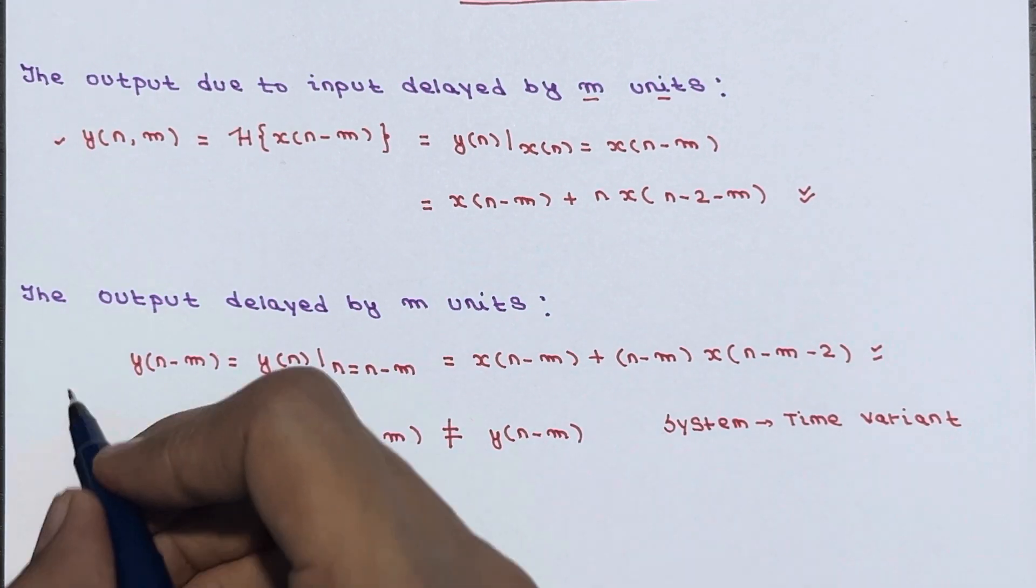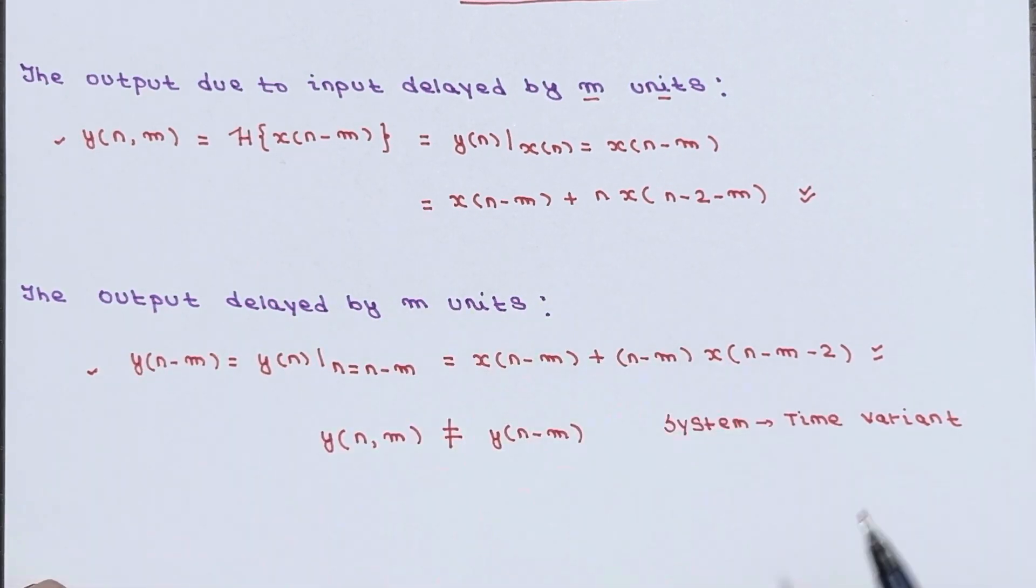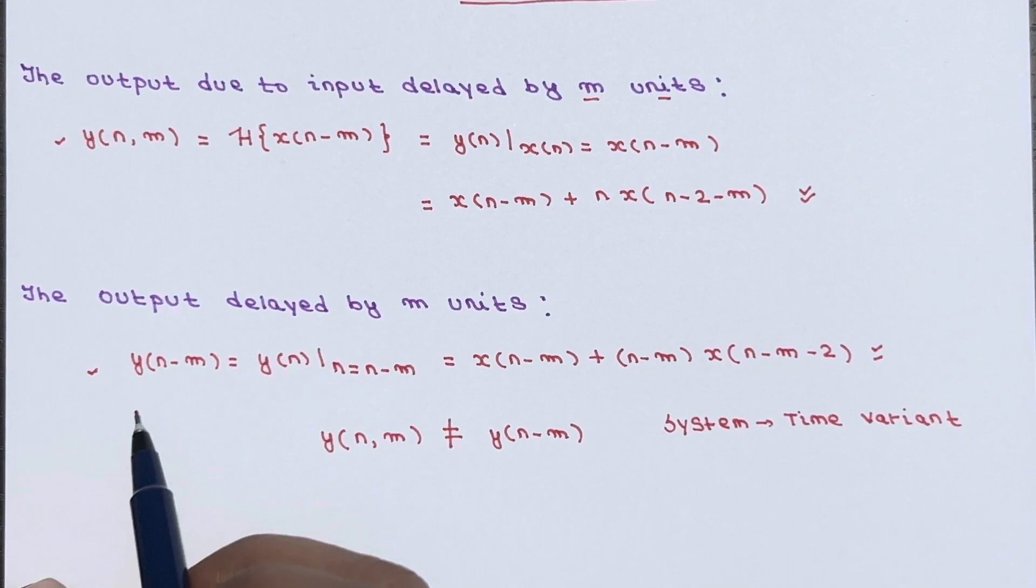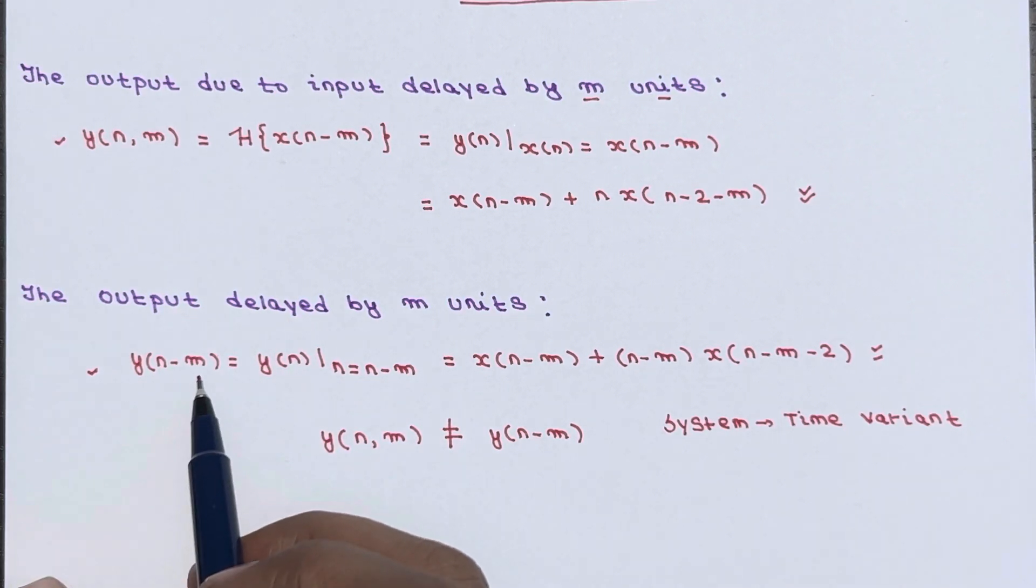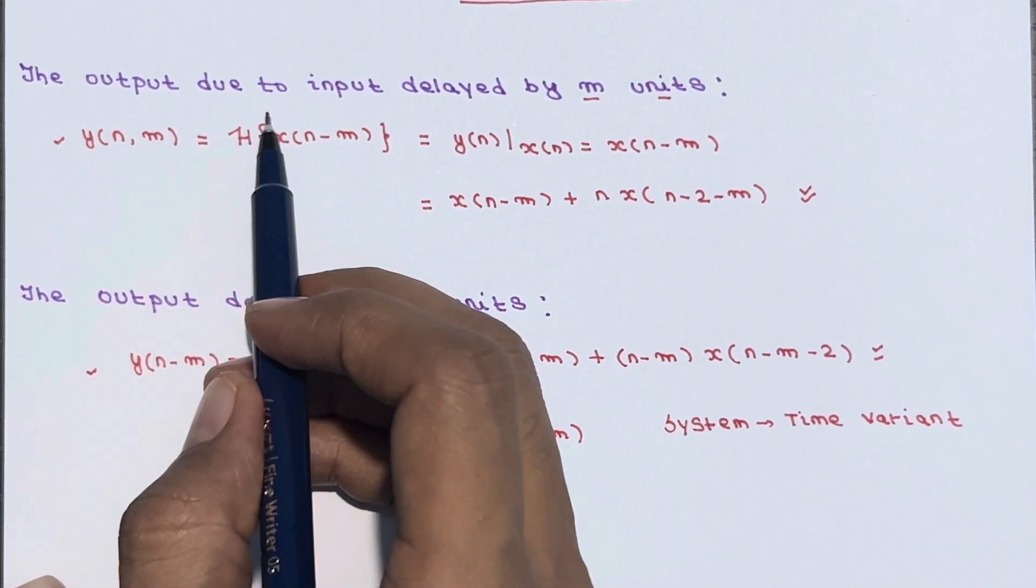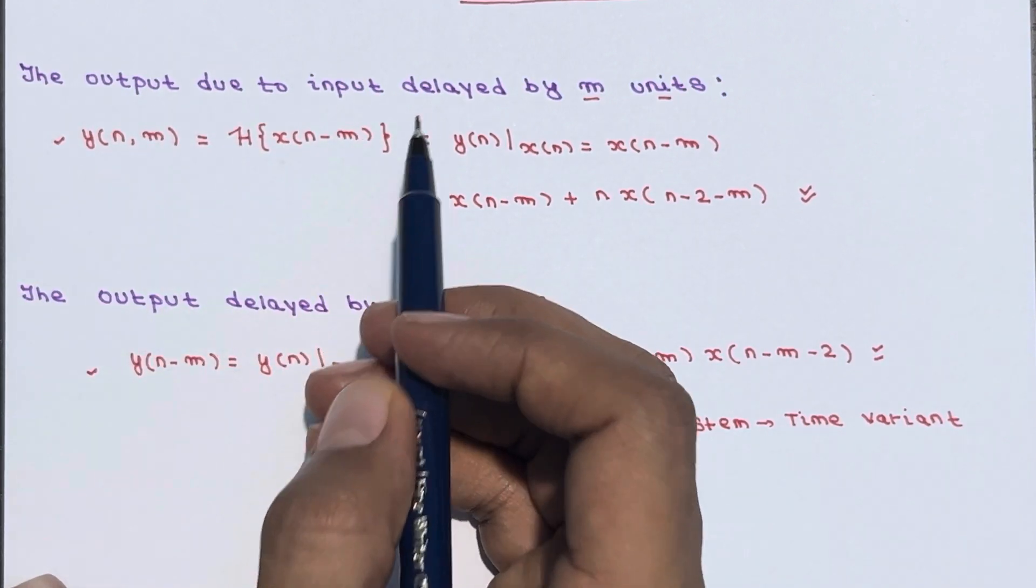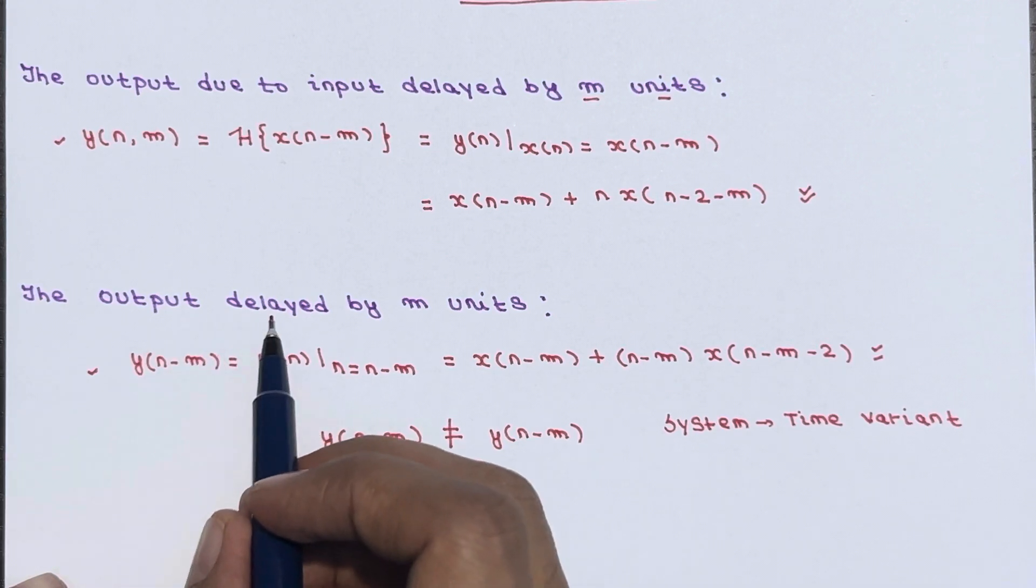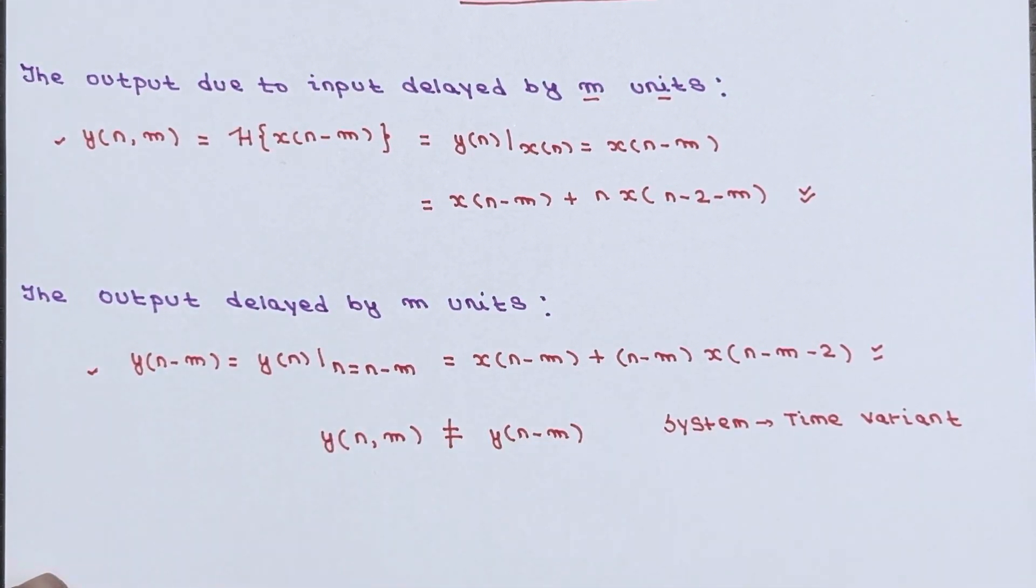So you have to calculate these two things in every example. One is y(n,m), another is y(n-m). So y(n,m) represents the output due to input delayed by m units, and y(n-m) represents the output delayed by m units.